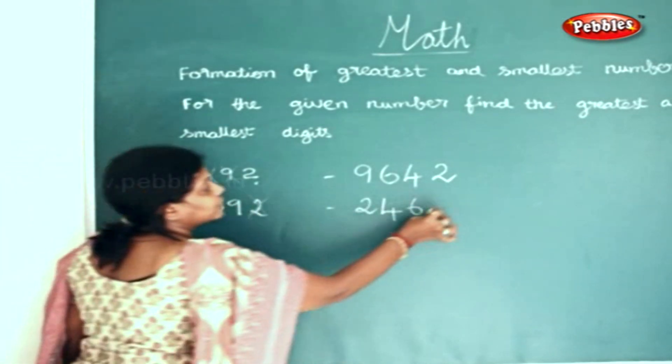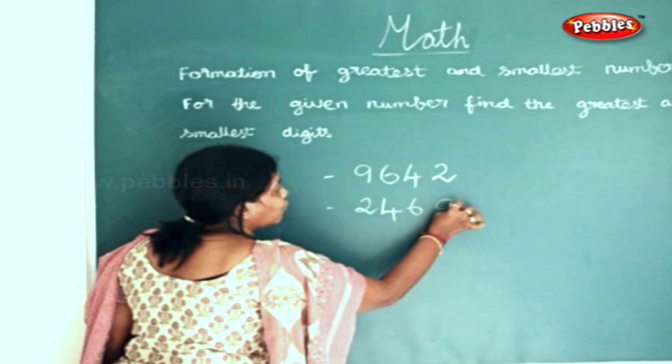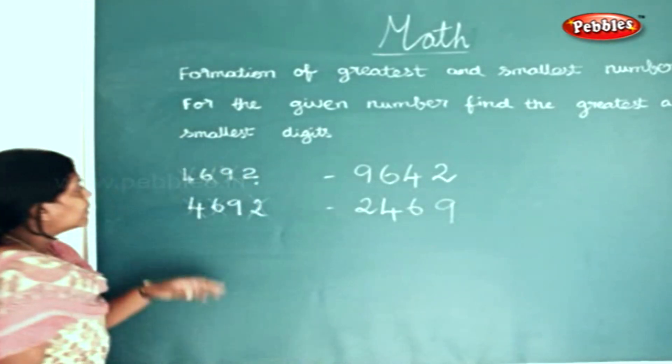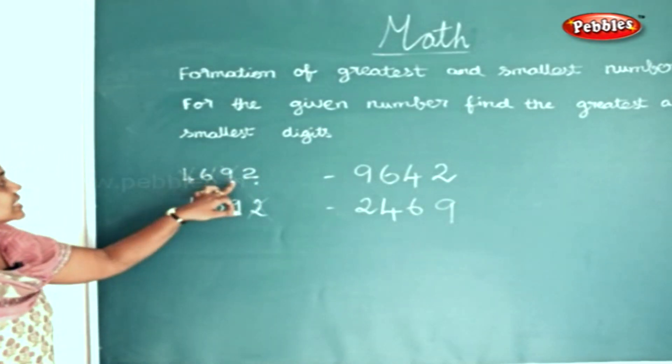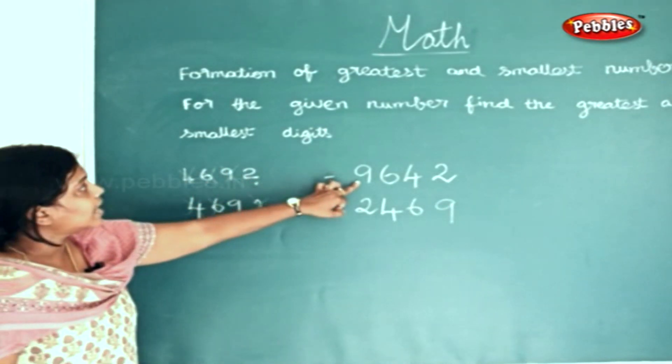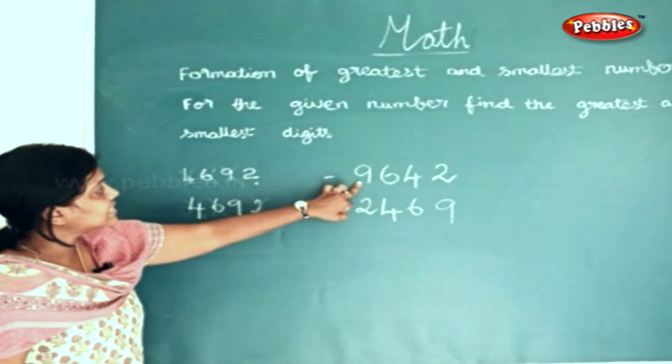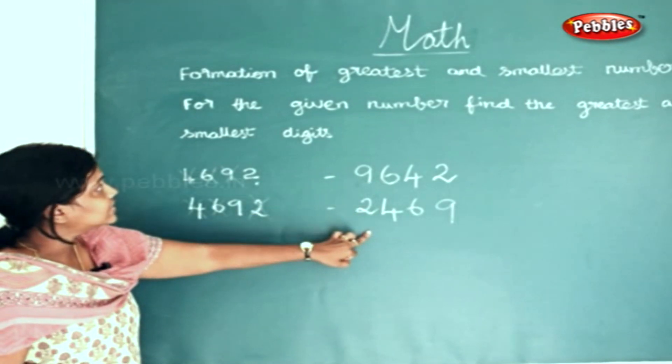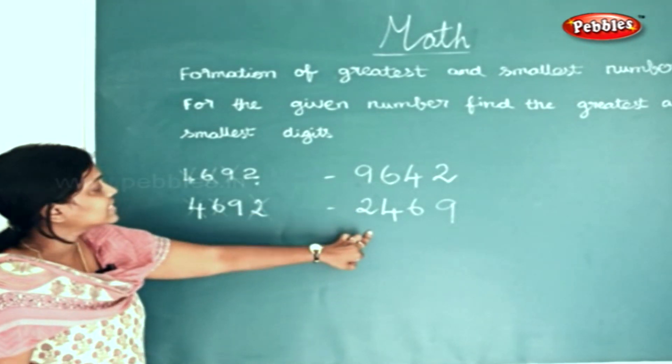The number left is nine. So for the given number four, six, nine, two — this is the largest number and this is the smallest number.